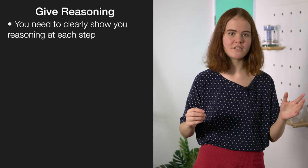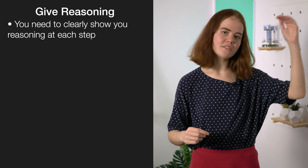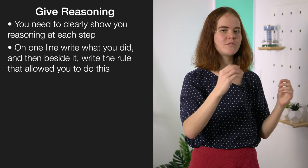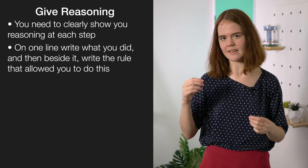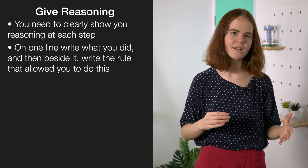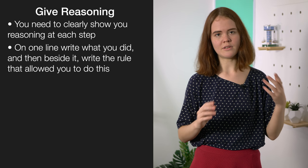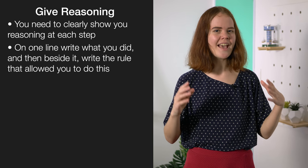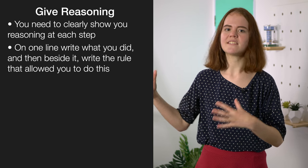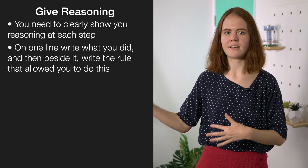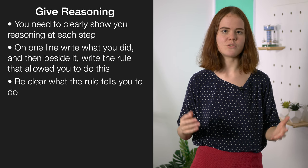The most important thing to remember is that this paper is called geometric reasoning, so you need to clearly show your reasoning at each step. On one line write down exactly what step you took, and next to that write which rule you used. You don't need to write these in complete sentences or use the exact same notation your teacher used, but you do need to be really clear. It's also not enough to just say something like 'co-interior angles' — you need to say something like 'co-interior angles add to 180.' Be clear what the rule actually tells you to do.